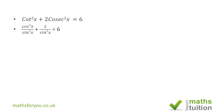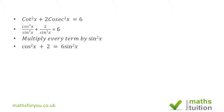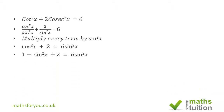If we now multiply every term by sine squared x, we end up with cos squared x plus 2 is equal to 6 sine squared x. We now have a choice: we either express cos squared x in terms of sine squared x or express sine squared x in terms of cos squared x. We know that cos squared x plus sine squared x is 1, so we then have 1 minus sine squared x plus 2 is equal to 6 sine squared x, because cos squared x is the same as 1 minus sine squared x.